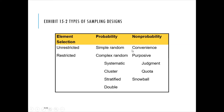That's for non-probabilistic sampling. The group already explained probabilistic sampling quite well. Basically, the best sampling technique is complex random sampling, then simple random, then restricted non-probability sampling. The worst is unrestricted convenience sampling.